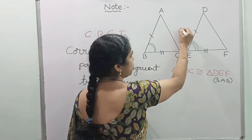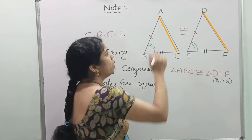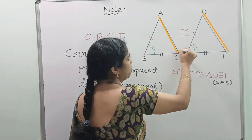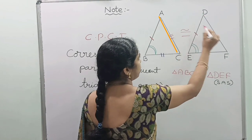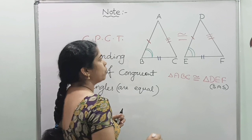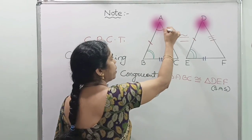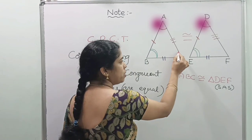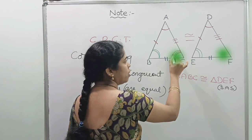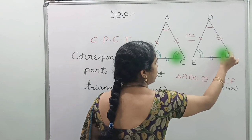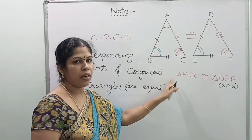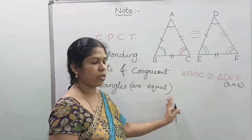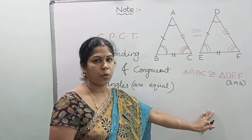If you observe both triangles, AC is the corresponding part of DF, so AC is equal to DF. And also the other two angles: angle A is equal to angle D, and angle C is equal to angle F. So in any two congruent triangles, the remaining corresponding parts are also equal. We will be using this concept in solving the exercise problems.